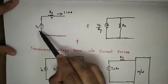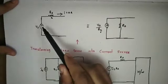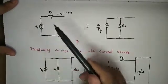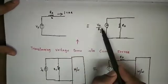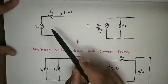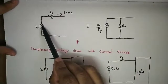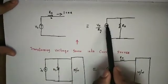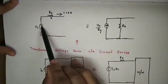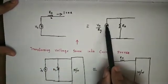Here is an important point. When you do the transformation between voltage source and current source, there can be confusion about voltage source polarities and current source direction. It is simple: if you have a voltage source with a positive terminal, when converting to a current source, the arrow head points toward the positive terminal.